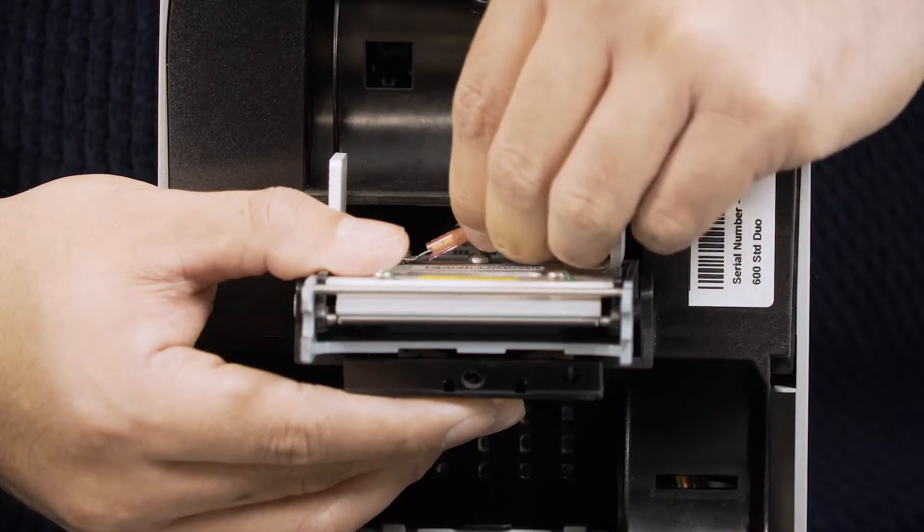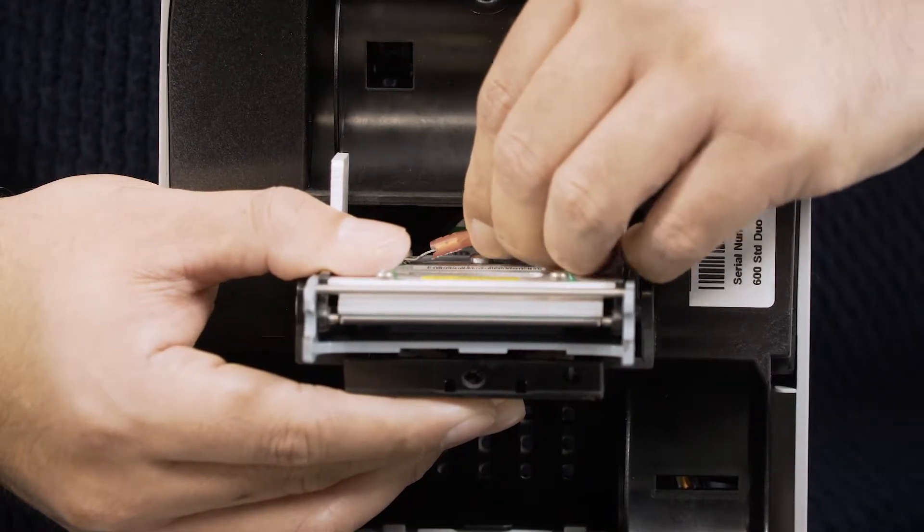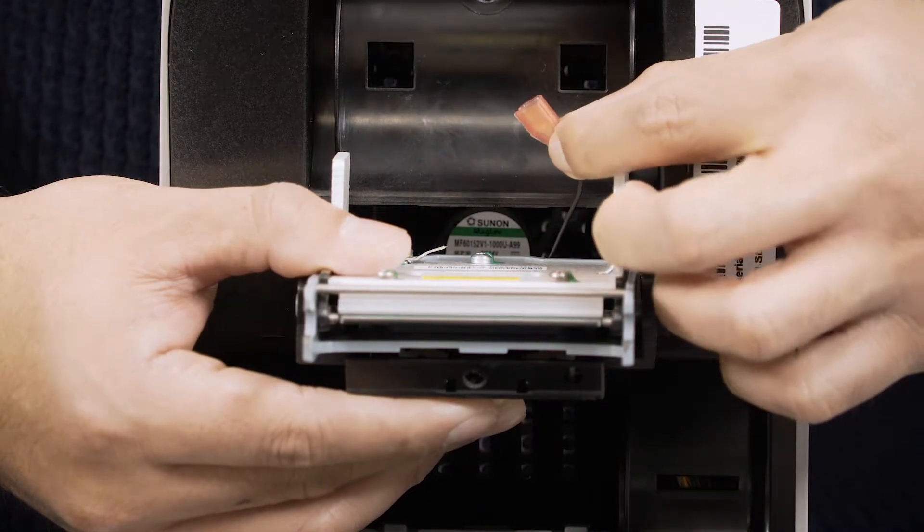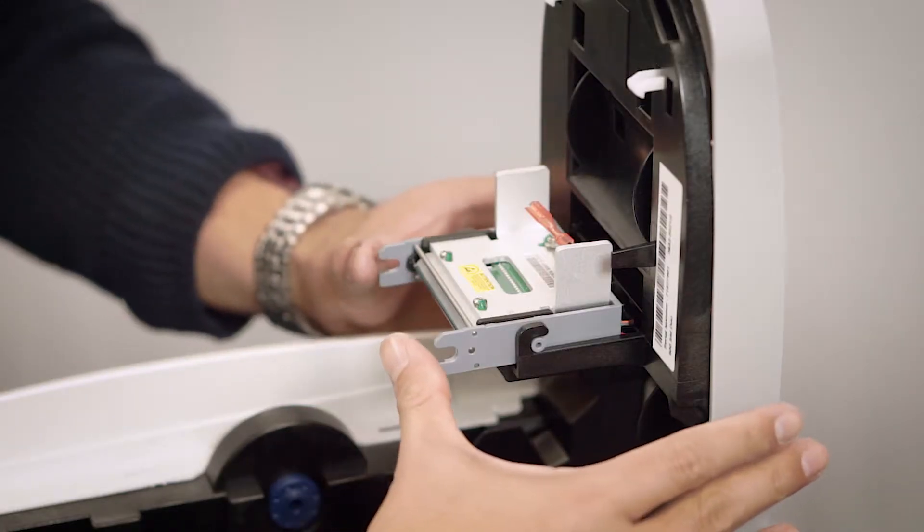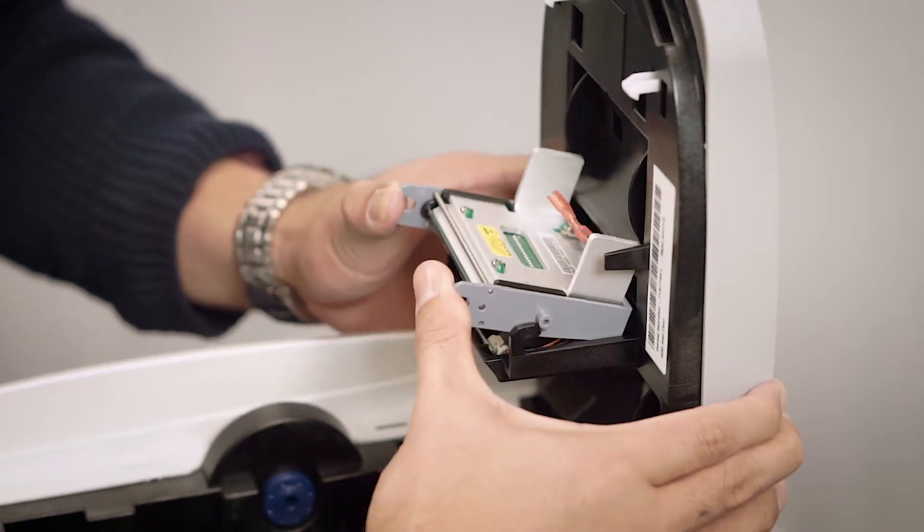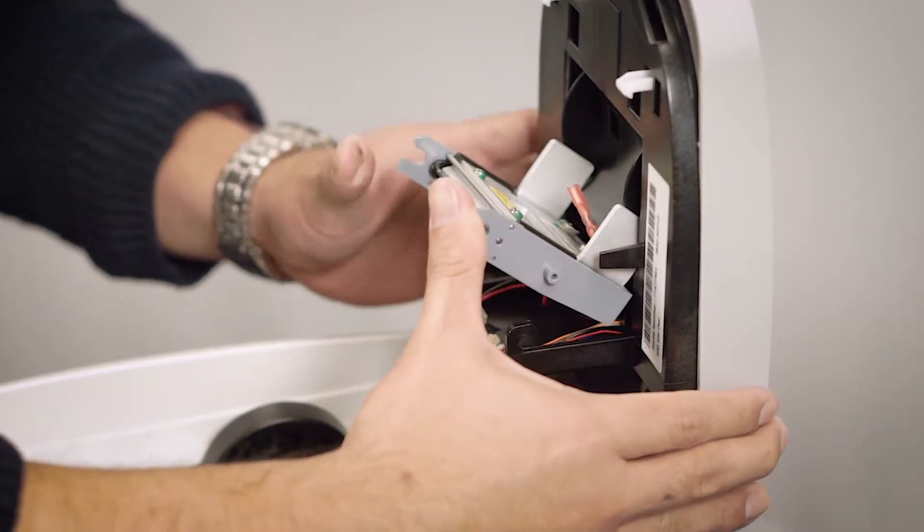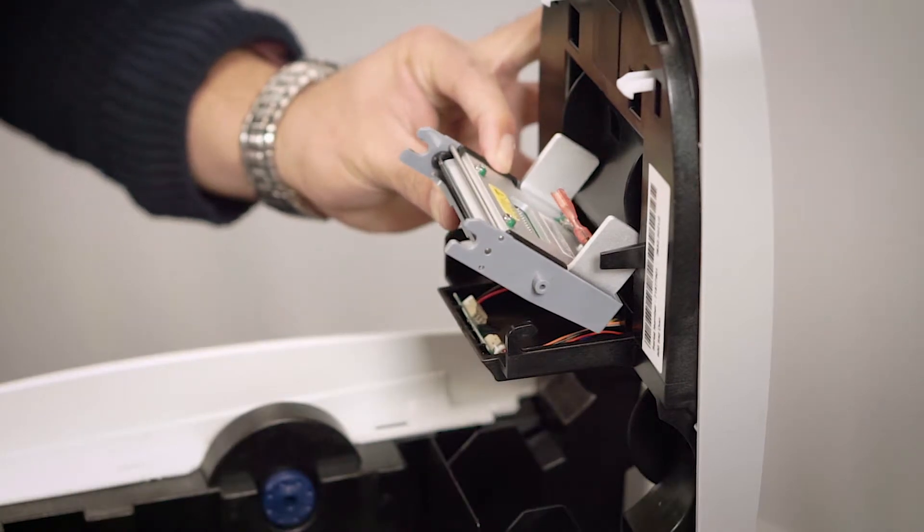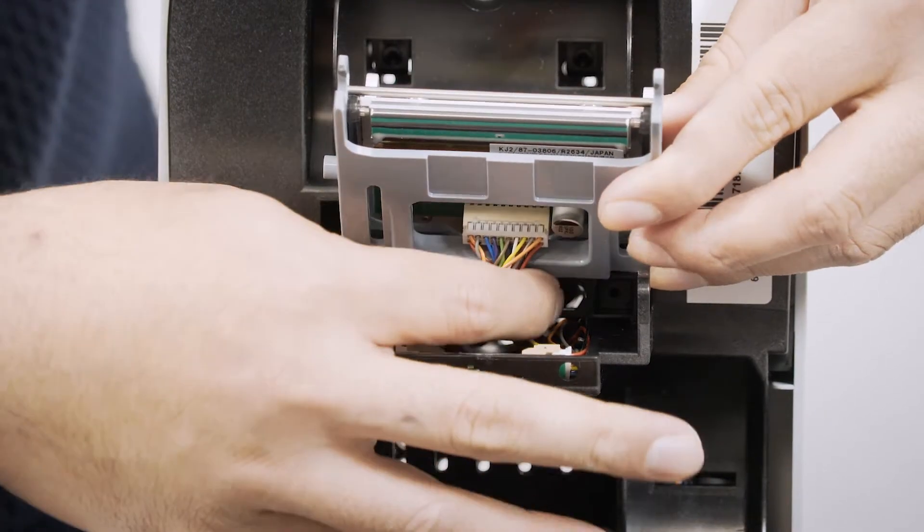Unclip the static drain wire. Push the print head back so it can slide up and out of the housing. Carefully unclip the print head cable as shown.